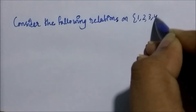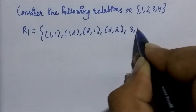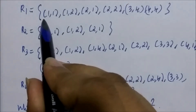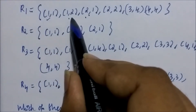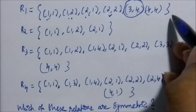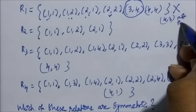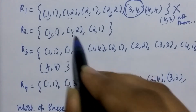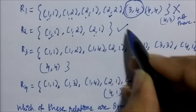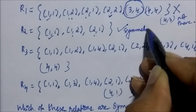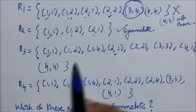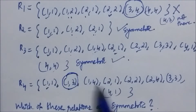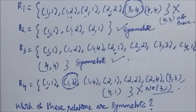Consider the following relations on the set {1, 2, 3, 4} — R1, R2, R3, and R4. R1 is not symmetric because (3,4) is present but (4,3) is not. R2 is a symmetric relation because whenever (A,B) is present, (B,A) is also present. R3 is also symmetric because whenever (A,B) is present, (B,A) is also present. R4 is not symmetric because (1,3) is present but (3,1) is not in the relation.